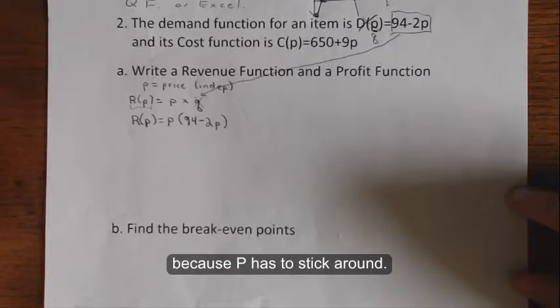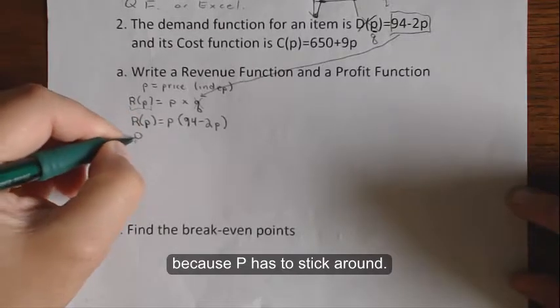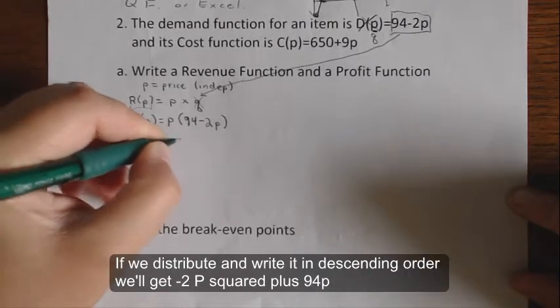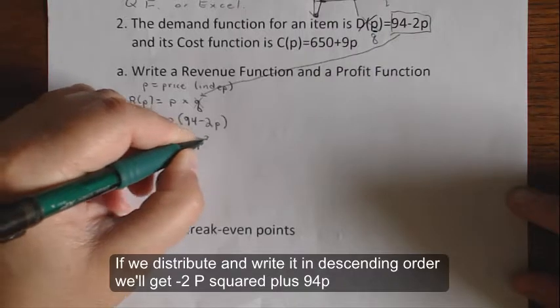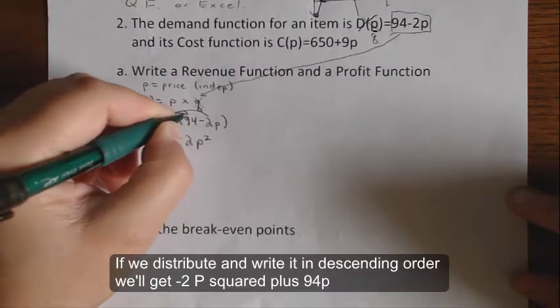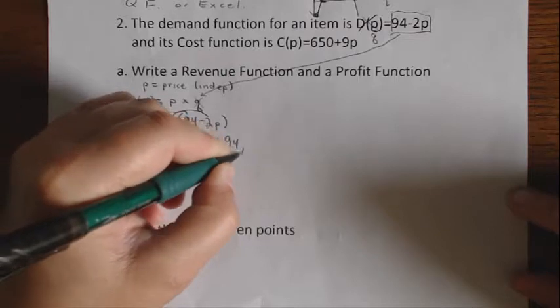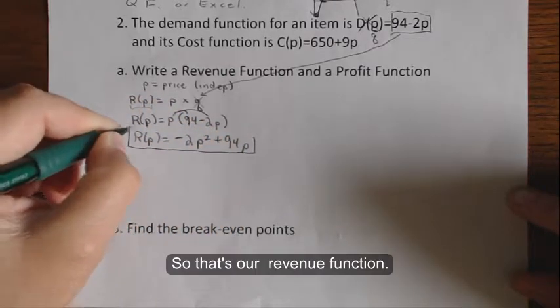We're going to take the demand equation and substitute in for q this time, because p has to stick around. If we distribute and write it in descending order, we'll get -2p² + 94p. So that's our revenue function.